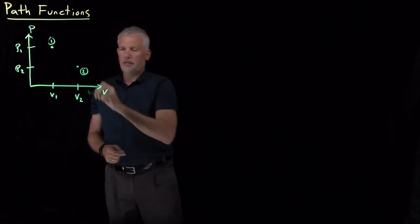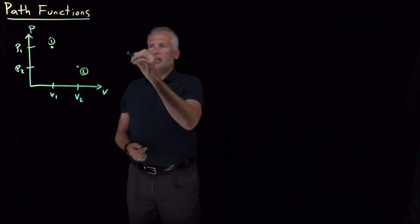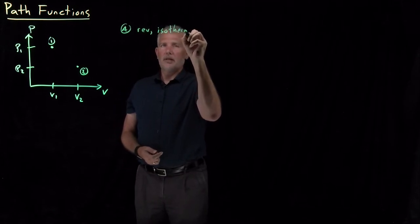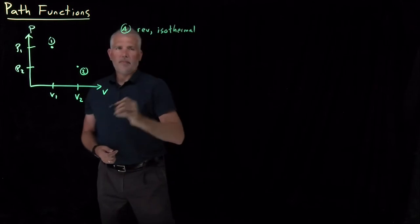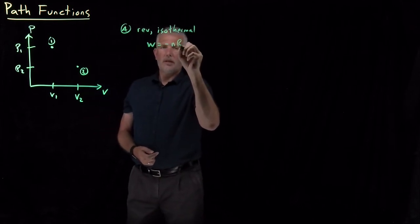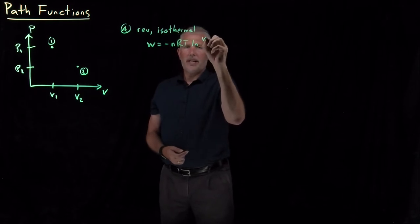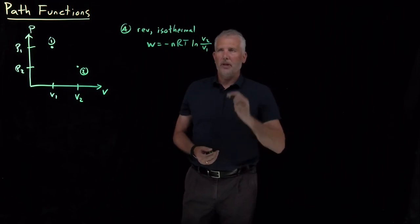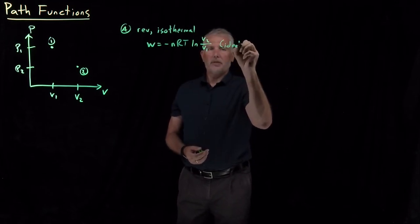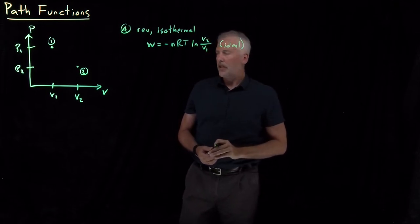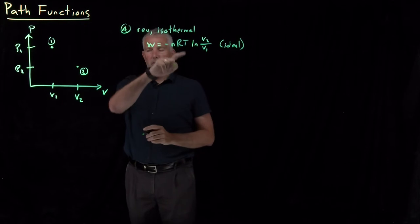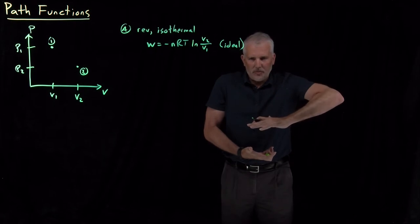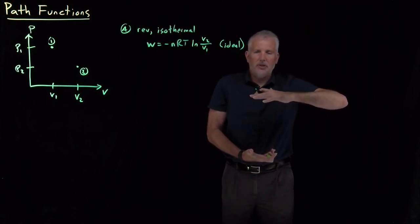If we reversibly and isothermally expand this gas, the work performed by the gas can be calculated with the expression minus NRT times the log of V2 over V1 — if it's an ideal gas, because we use PV equals NRT in deriving that equation. On the graph, for this reversible isothermal expansion, we have a gas confined to a small volume at a large pressure of two atmospheres, and we gradually reduce the pressure.